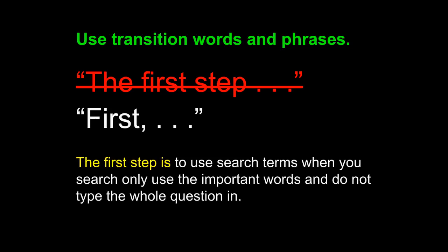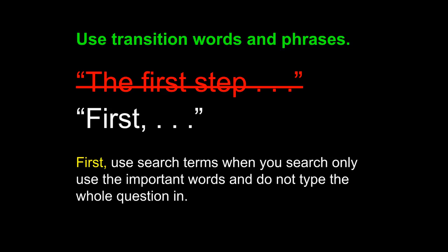So a sentence like 'The first step is to use search terms when you search, only use the important words and do not type the whole question in' becomes: 'First, you use search terms.' The subject here is the understood 'you,' and the verb is 'use.' Both of these are much clearer than 'the first step is.' The understood 'you' indicates the researcher, the reader, and 'use' tells you what they're doing. Therefore, this sentence clearly indicates the person who's acting and the action they're doing. 'The first step is' did not. This makes for much clearer writing.